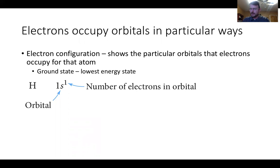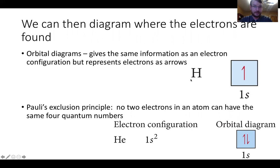We're going to look at these orbitals. We looked at a table in part three of chapter seven, and we're going to use that table to help describe how to write electron configurations. We'll come back to electron configuration as we compare it to another way we can draw these. The electron configuration uses the elemental symbol — for example, hydrogen H, which has only one electron.